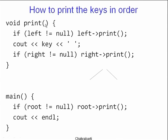How do you print the keys in order? The data structure is defined recursively with ordered keys: the root key is always larger than any key in the left subtree and strictly smaller than any key in the right subtree. So we can write a recursive routine: if left is not null, print the left; then print myself; then if right is not null, print the right — left, me, right. By induction, this recursive routine will necessarily print the keys in increasing order.